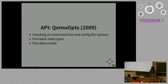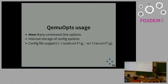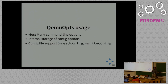The first API I'll talk about is QMU Ops. QMU Ops is a very old API, introduced in 2009 to handle QEMU command line options and config files. It has very few basic data types and a flat data model. QMU Ops is used to pass many of the command line options inside QEMU, and even when a command line option is not parsed using QMU Ops, it's used as a storage system for command line options — so we can use the same infrastructure to handle config files and command line options at the same time.